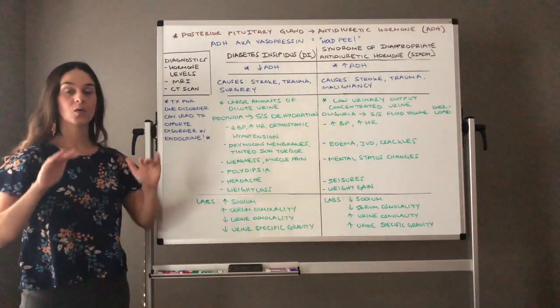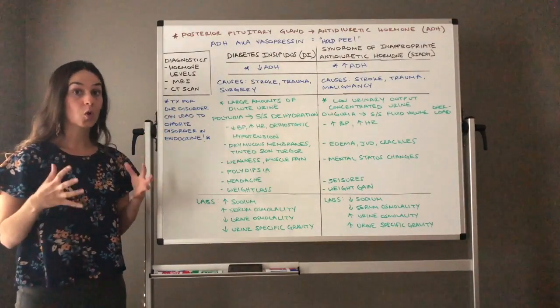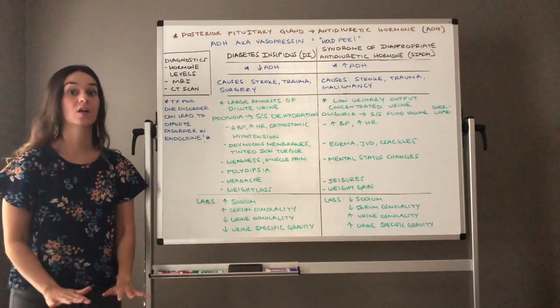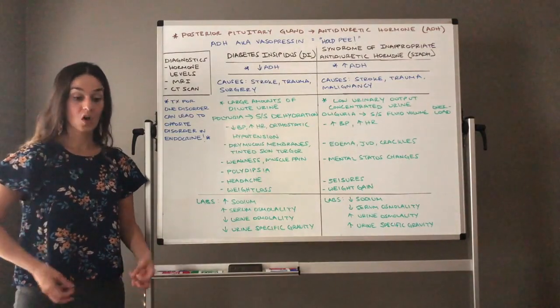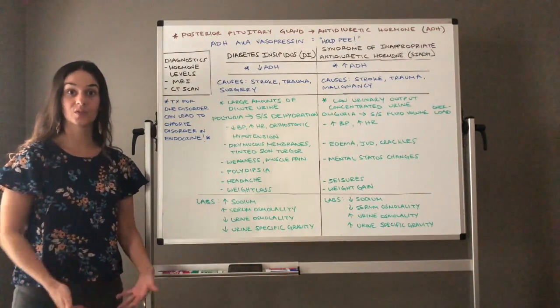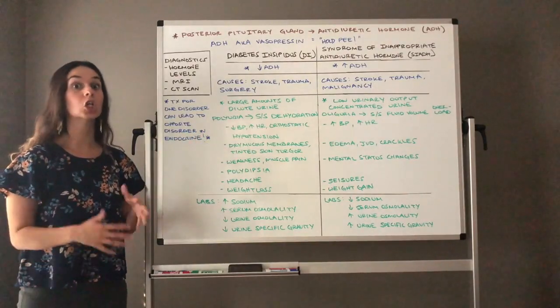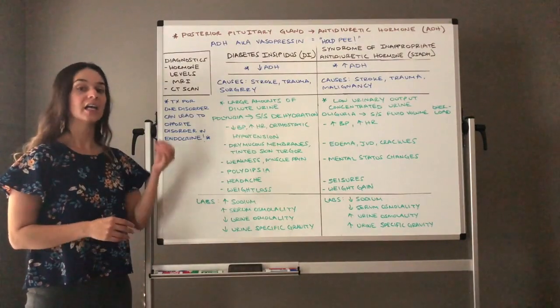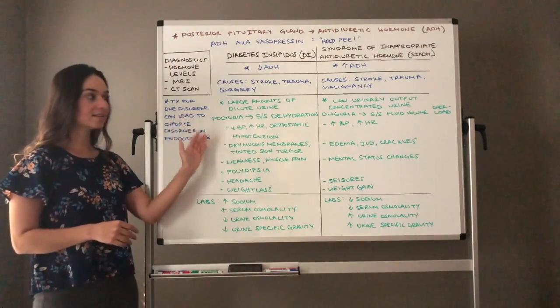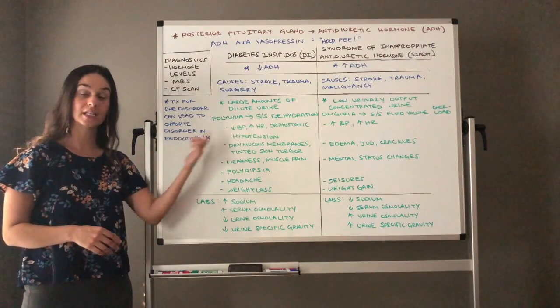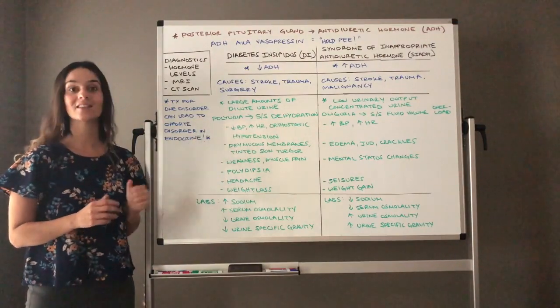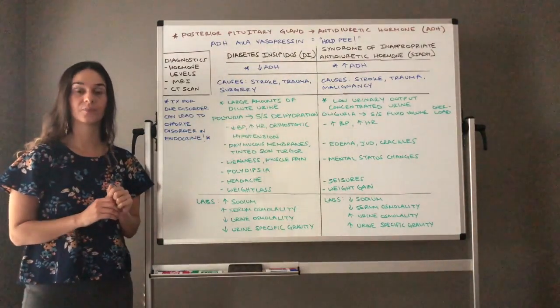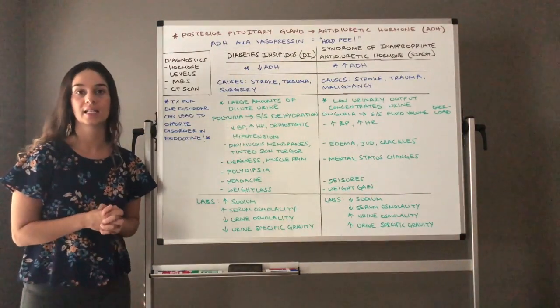So let's begin. Diabetes insipidus, low ADH. So the hormone that we need to hold on to water in our kidneys is very low. So we are not holding on to water in our kidneys. All of our water is being excreted in very dilute urine, large amounts of dilute urine. So this client's output is very high. And what we're going to think about the signs and symptoms that we correlate with diabetes insipidus is signs of dehydration. The polyuria leads to signs and symptoms of dehydration.